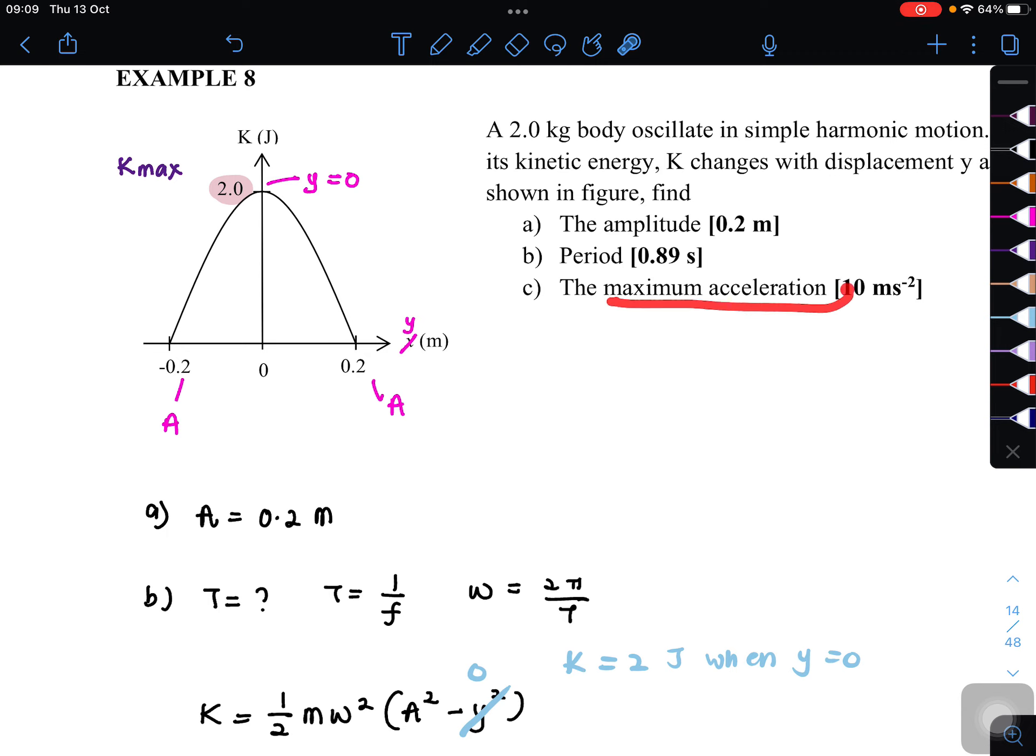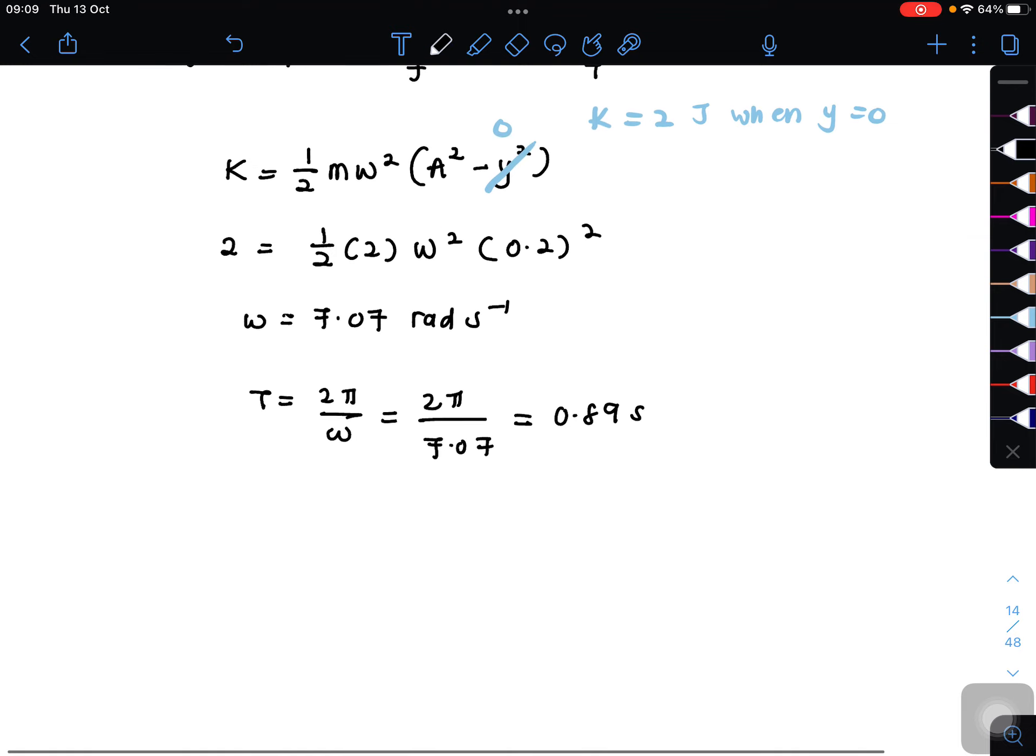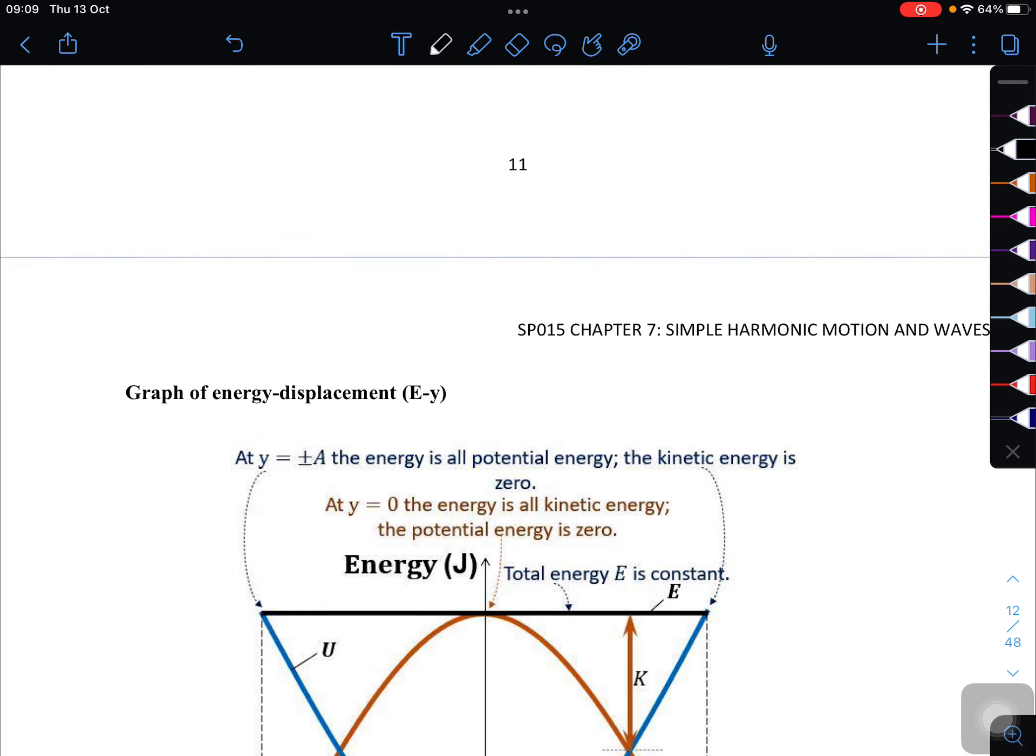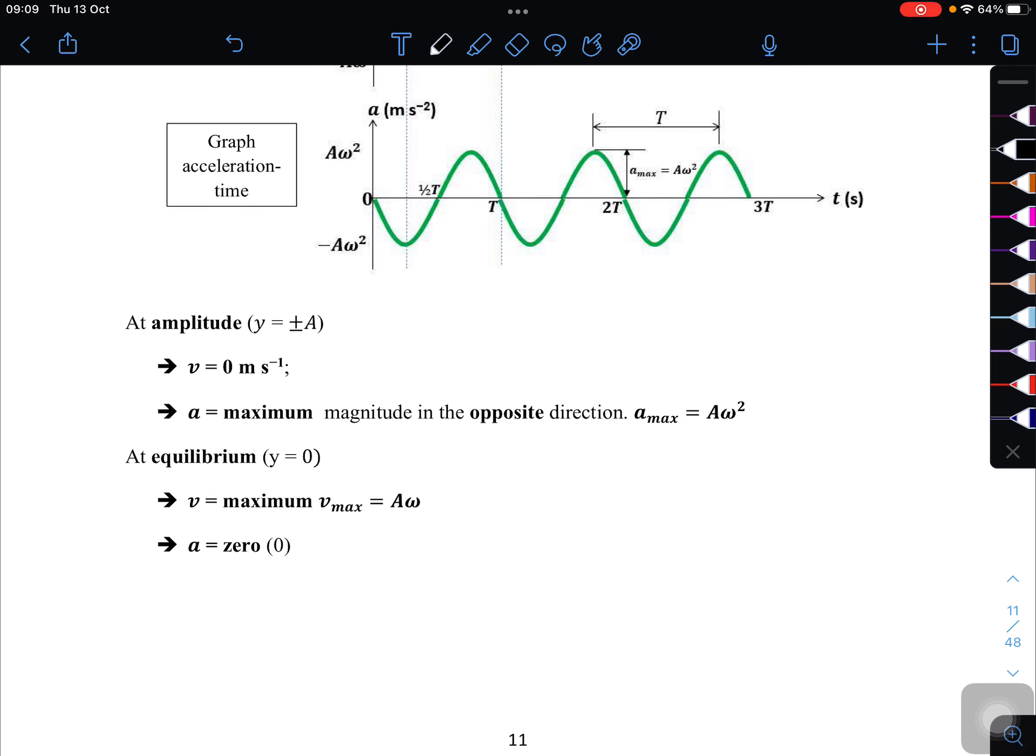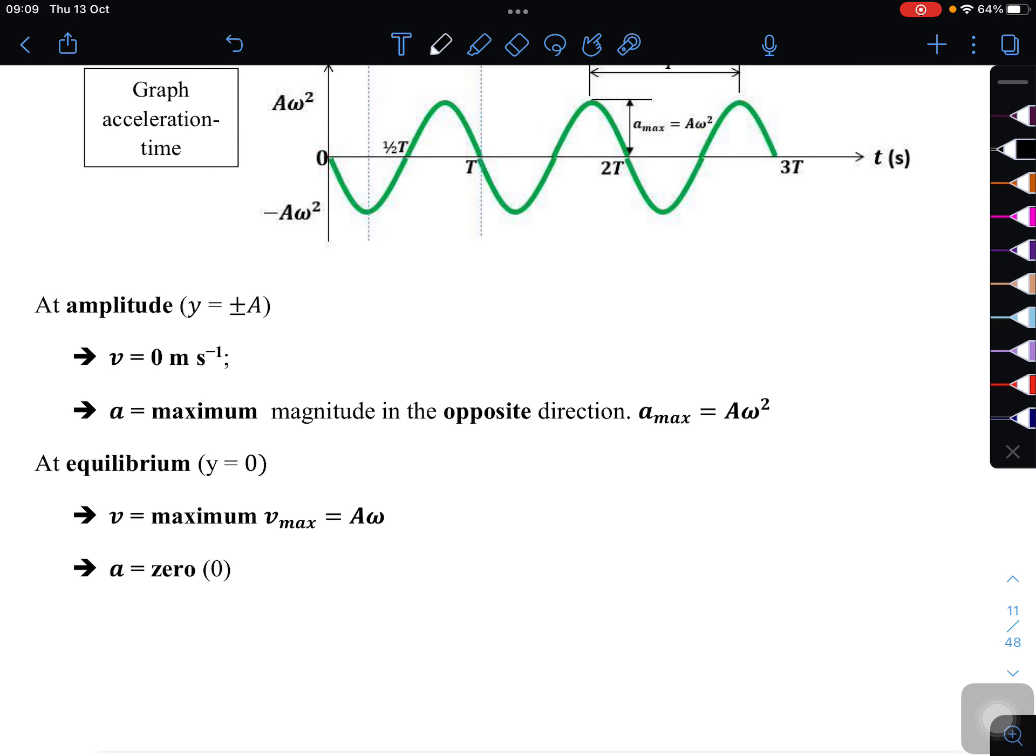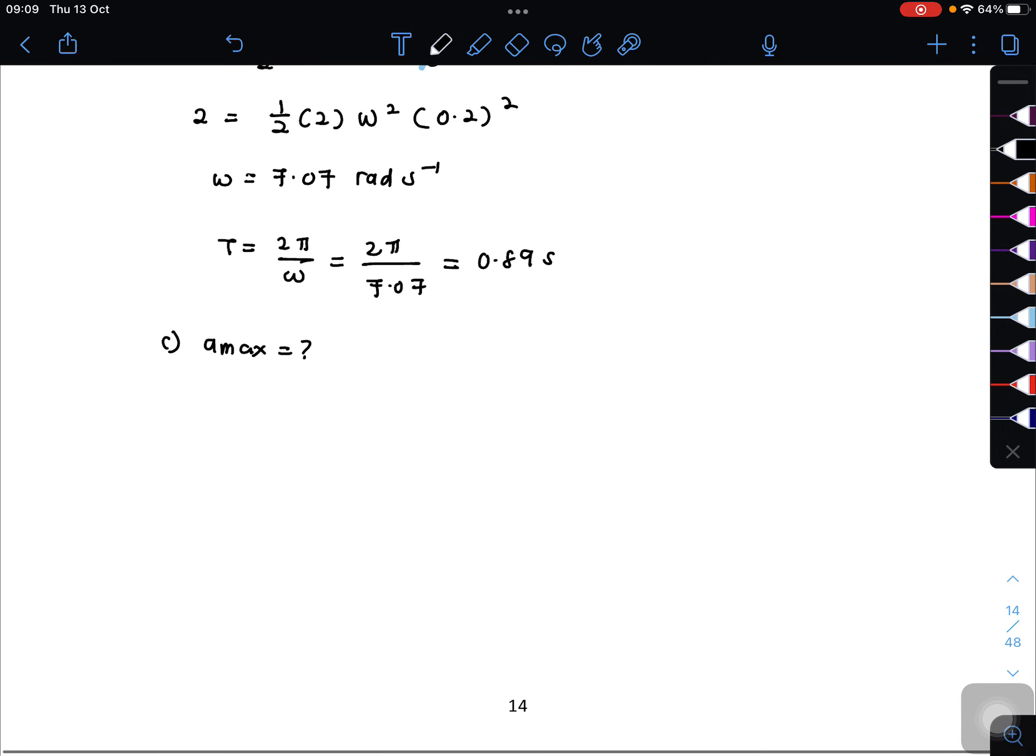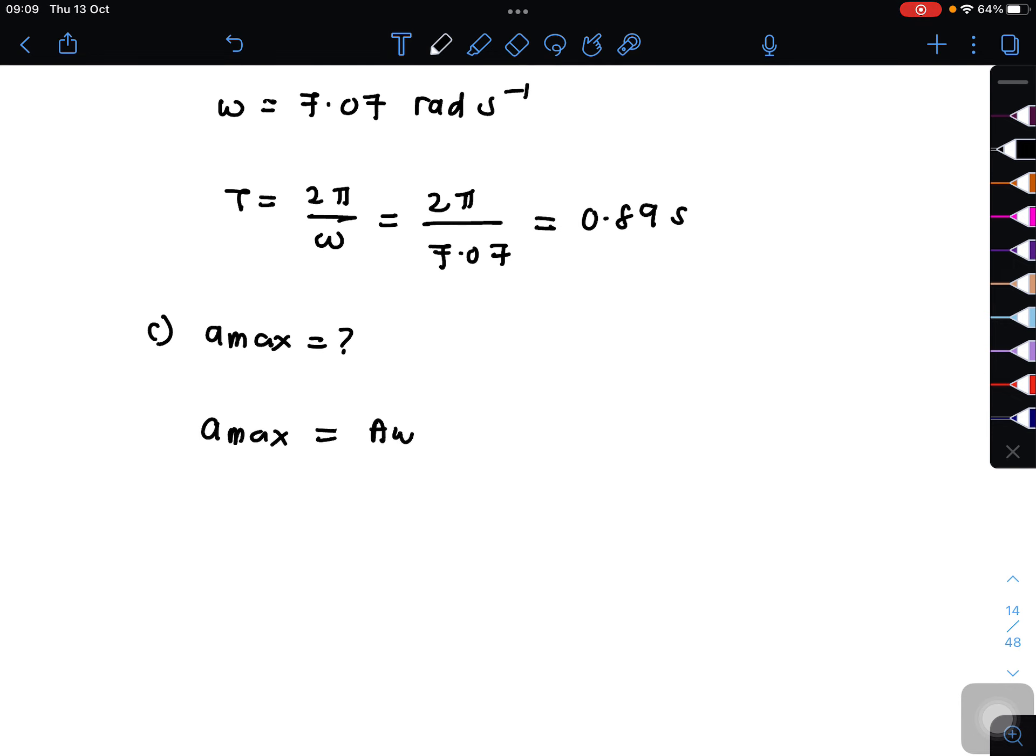And last one we want to find the maximum acceleration. Maximum acceleration. Kalau tengok dekat nota, where is it? This one here. So maximum acceleration, this one. Maximum acceleration is always equal to A omega square. So this one is formula untuk maximum acceleration. And this one adalah formula untuk maximum velocity. Always kena ingatlah this one. So gunakan sahaja formula ni A omega square. And then you masukkan value dia since kita sudah ada 0.2 omega is 7.07. And then dapat A max is equal to 10 meter per second square.